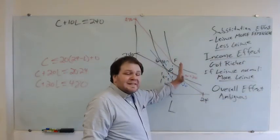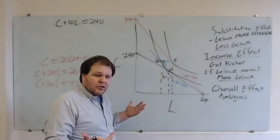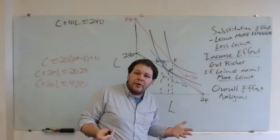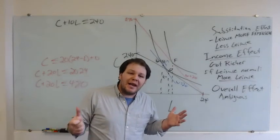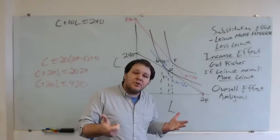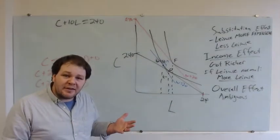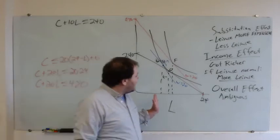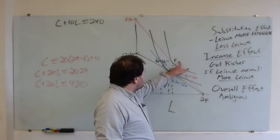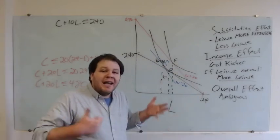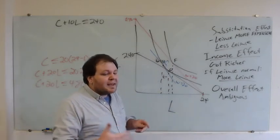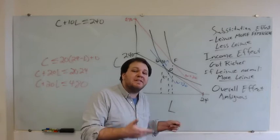In the case where leisure increases after a wage increase, there's nothing really crazy going on. We saw with Giffen goods that when a price goes up you can actually buy more of the good. But here, when the wage goes up we buy more leisure — not because it's an intensely inferior good, but because it's a normal good, with preferences behaving the way we expect most preferences to behave.